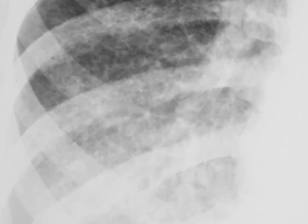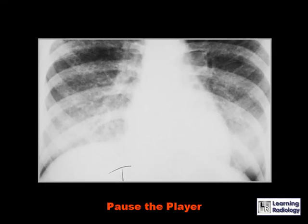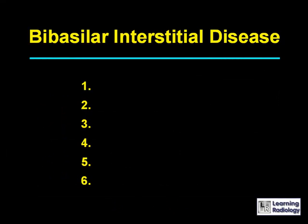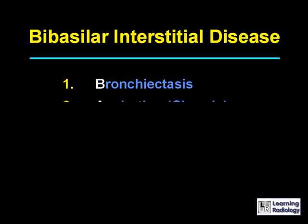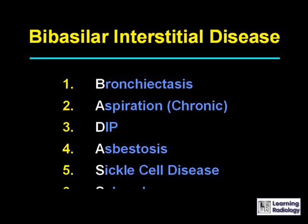This is the next differential: bibasilar interstitial disease. There are six causes: bronchiectasis, chronic aspiration, desquamative interstitial pneumonia, asbestosis, sickle cell disease, and scleroderma.